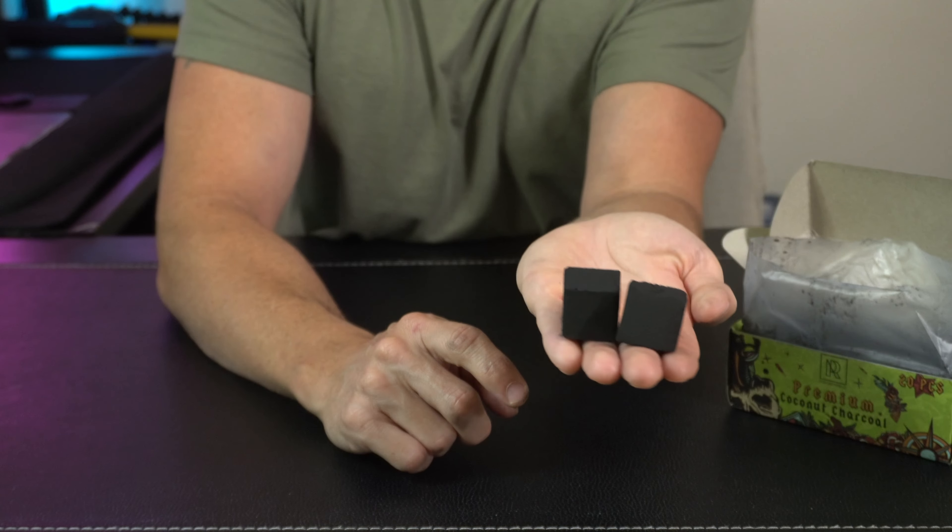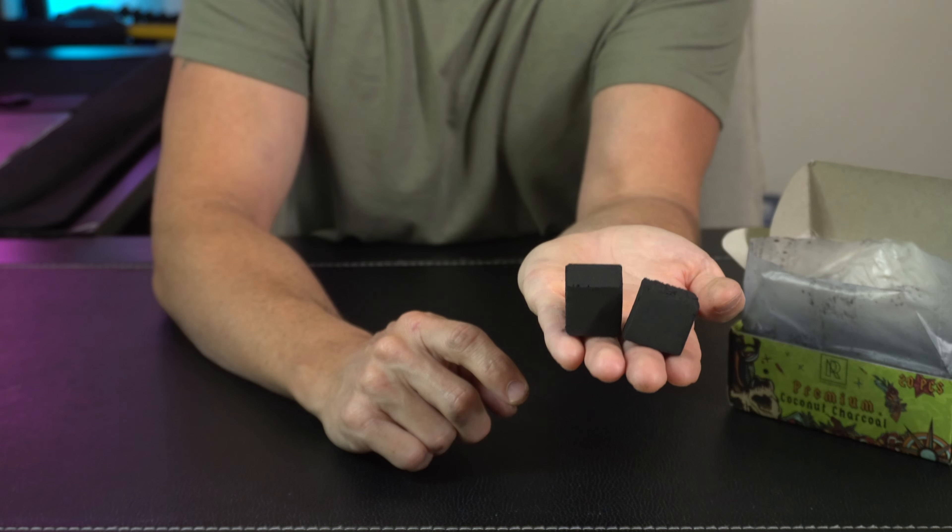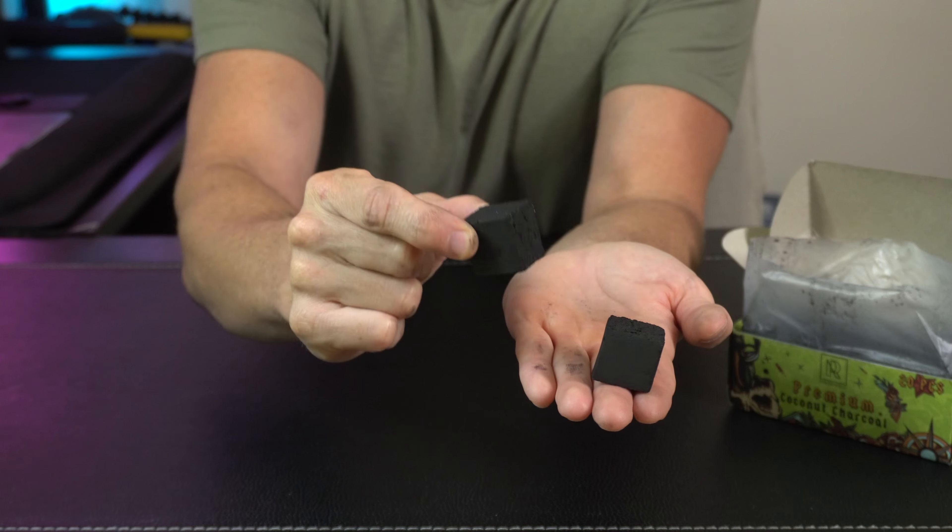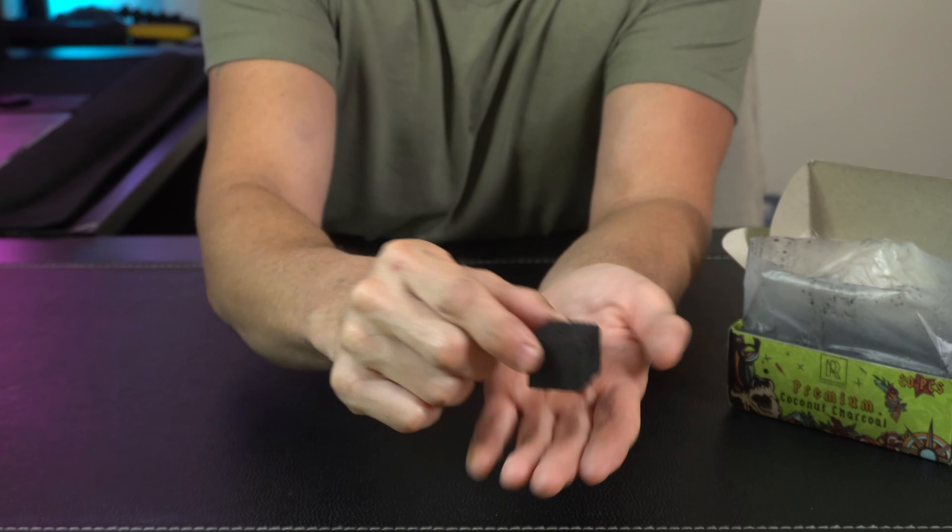So if we come in for a closer look, this is what the coals look like right here. This is a 20 pack of coals. They are not flats. They're perfect cubes here and these are one inch by one inch coals right here.